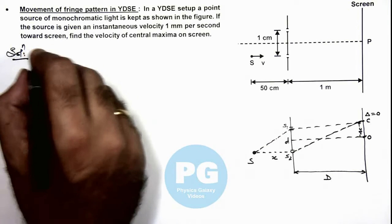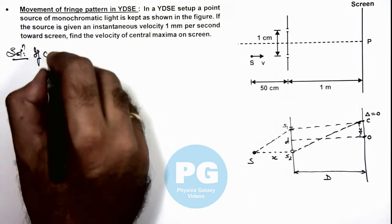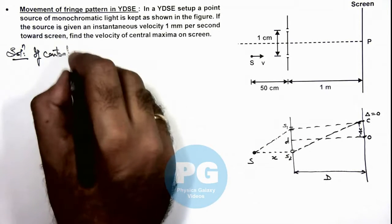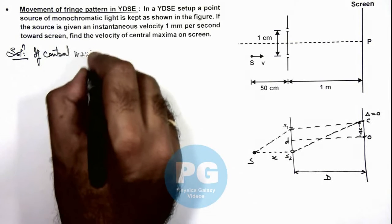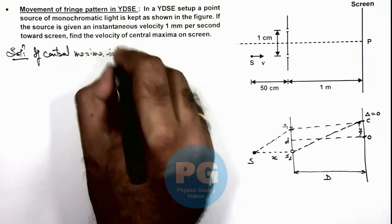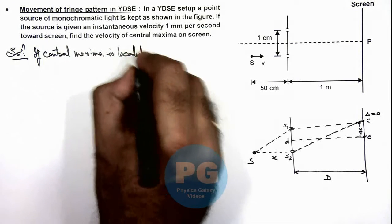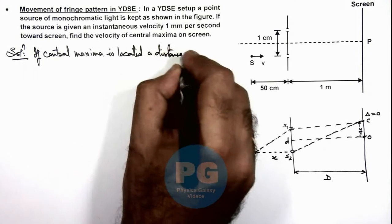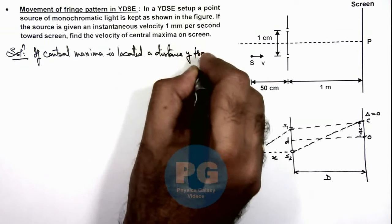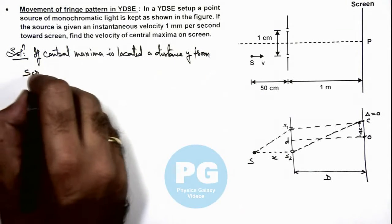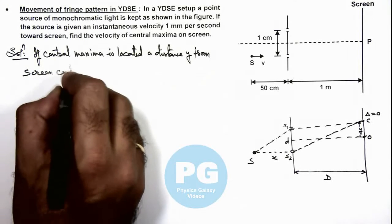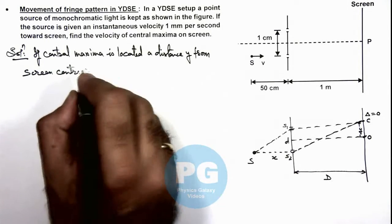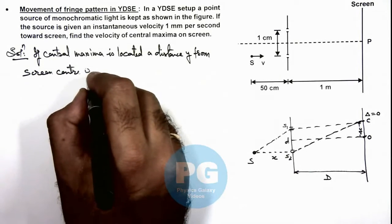Here we use - before falling on slits, the path difference would be the root of d squared plus x squared minus x.